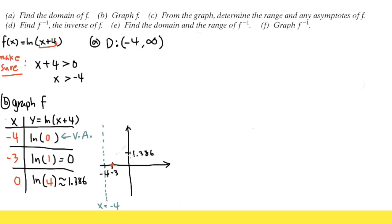We have another point here. We now have the vertical asymptote and two other points — this is enough to graph a log function. Keep in mind, whenever the graph approaches the vertical asymptote, the graph will either go straight down or straight up. I'm going to connect the points with a nice curve, following it back and going straight down. We are done with the graph.